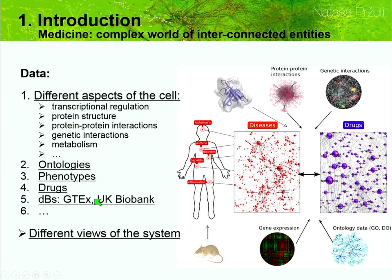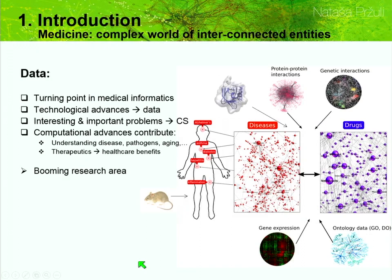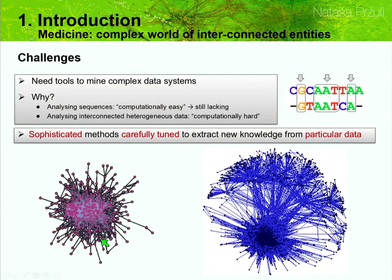There's also a lot of information on drugs and so forth. Currently we are at a very nice moment in the history of informatics where technological advances have yielded very large amounts of data, but without computer science and mathematics we cannot really advance too much. There are many interesting and important problems that computational scientists need to address to move this field forward, and this has been a booming research area.